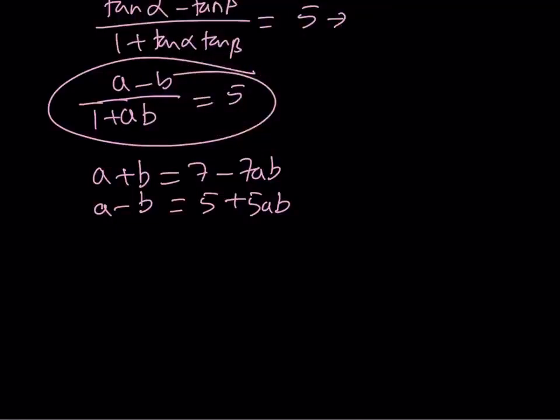Let's eliminate the ab term. Multiply this by 5 and multiply the bottom one by 7, so we're talking about the LCMs here. That's going to give us 5a plus 5b equals 35 minus 35ab.